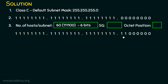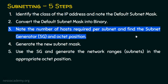The subnet generator is the first one encountered moving from right to left. Its decimal position is 1, 2, 4, 8, 16, 32, 64 — so the subnet generator is 64. This subnet generator is in octet position 4, since it falls in the fourth octet. Step 3 is now complete.